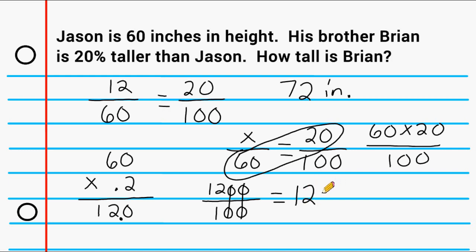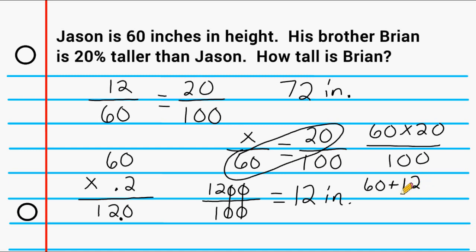But be careful — a lot of students might write down that the answer is 12 inches, but that wouldn't make sense. If Brian were only 12 inches tall, that would be just 1 foot. The problem states Brian is 20% taller than Jason, so Brian is 12 inches taller than Jason. Because Jason is 60 inches tall and Brian is 12 inches taller, we add those values together for a total of 72 inches.